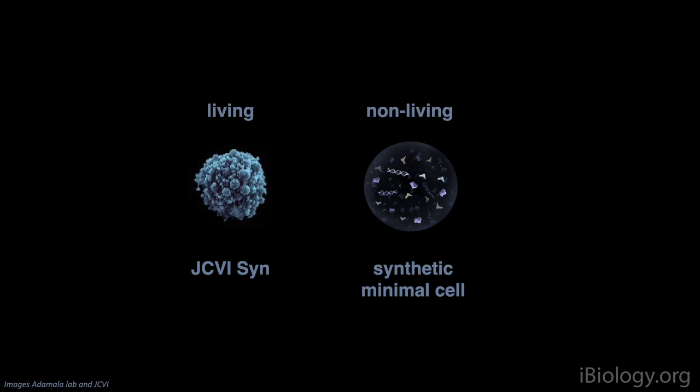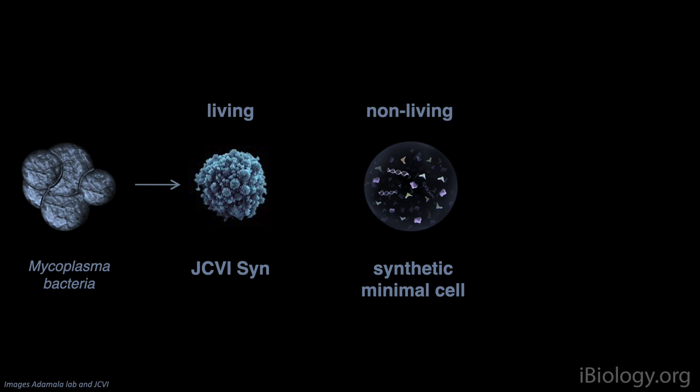JCVI-SYN cells are derived from a natural living bacteria, a mycoplasma. That bacteria has one of the smallest possible living genomes, and that genome was minimized to remove everything that was not absolutely crucial for survival of the organism. This smallest cell is still living, but we don't know the entire list of proteins and molecules that make that cell. So while synthetic, the JCVI-SYN cells are not yet fully understood.